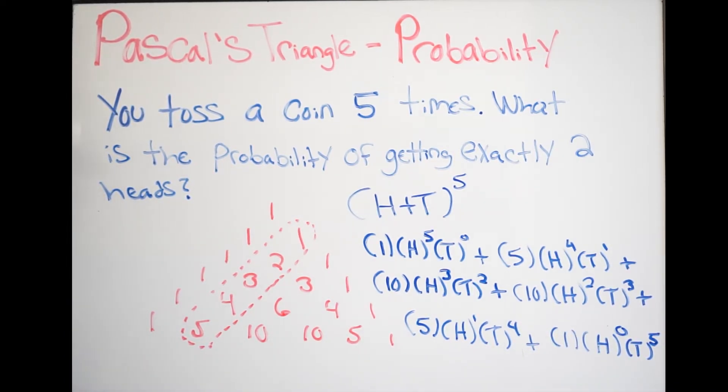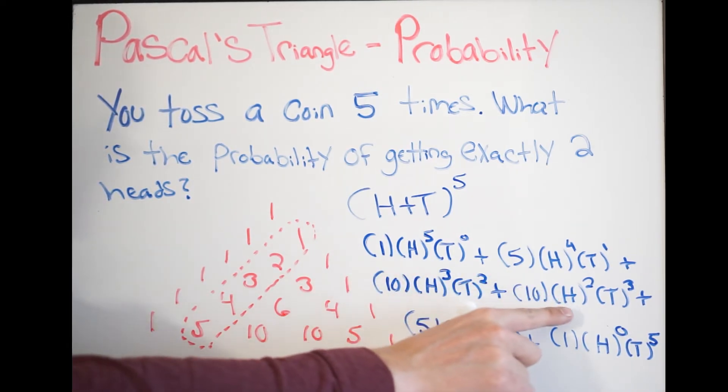So, now we're almost done with this problem. You have everything you need. So, what are we looking for? I want to know what is the probability of getting exactly two heads? So, look at what you expanded out. Look for H raised to the power of two, and that's going to be right here.